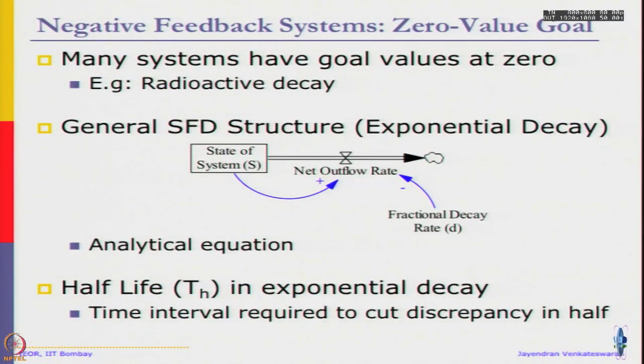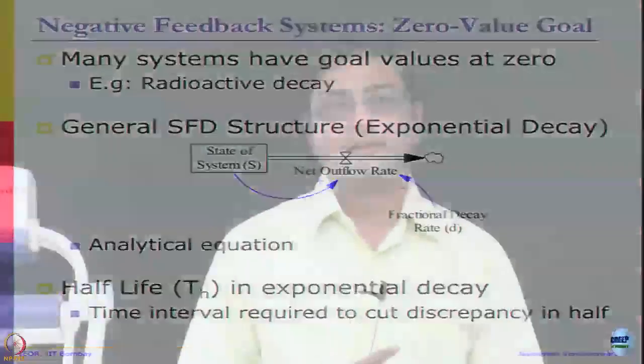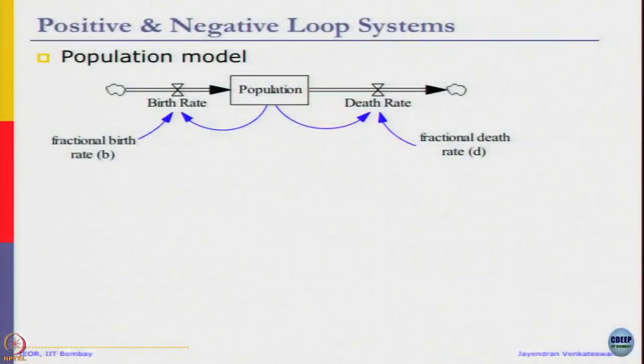So now we have looked at positive feedback systems, then we looked at negative feedback system, then we looked at negative feedback system with constant exogenous rate, either an inflow or an outflow, and then we had a zero value goal as a special case, but again negative feedback system. Now it will be interesting to take it to the next step. A natural question is, what happens when both positive and negative feedback occurs in the same system?